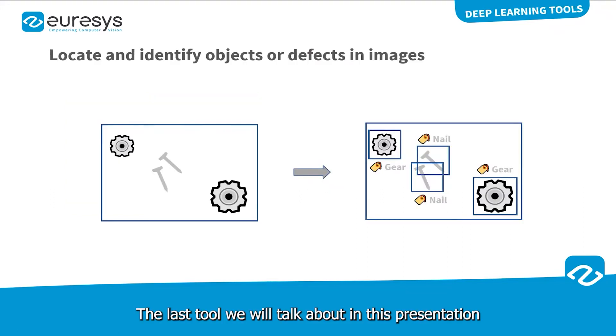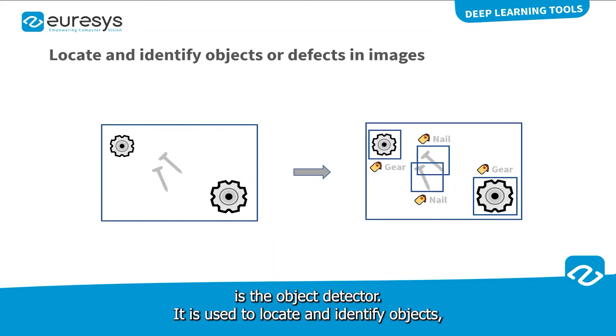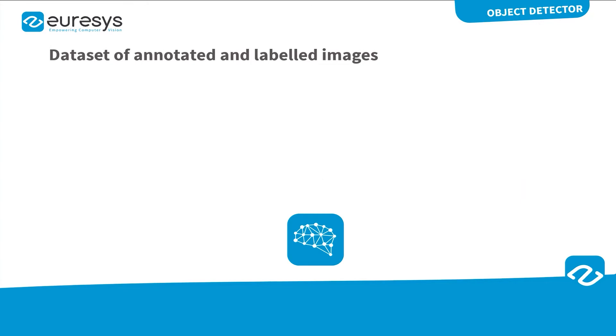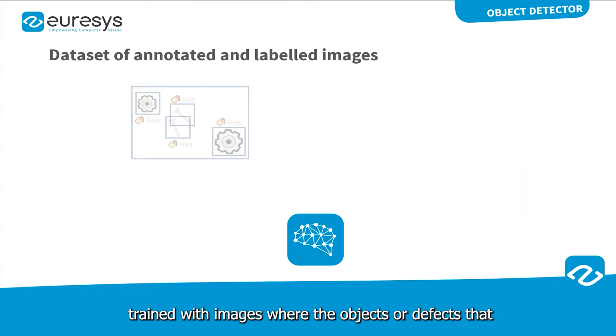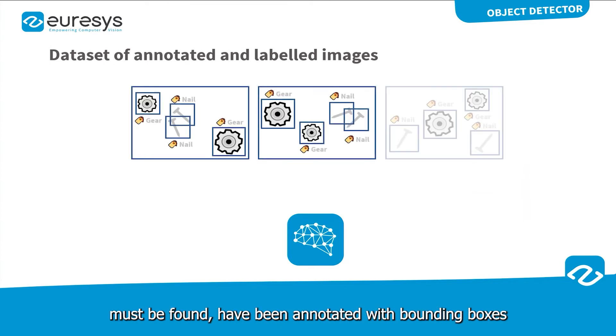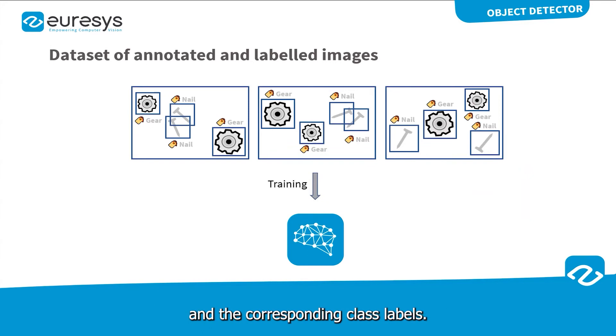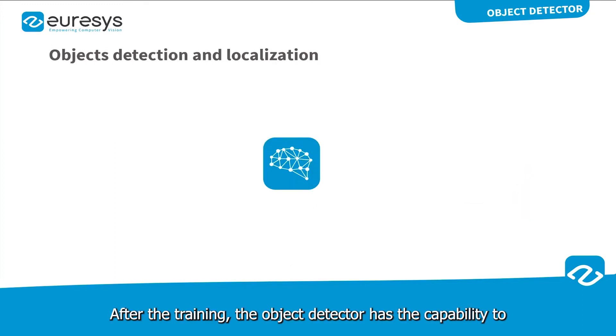The last tool we will talk about in this presentation is the object detector. It is used to locate and identify objects, products or defects in images. The convolutional neural network of an object detector must be trained with images where the object or defect that must be found has been annotated with bounding boxes and the corresponding class labels. After the training, the object detector has the capability to distinguish overlapping objects and as such is suitable for counting them.